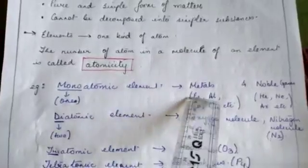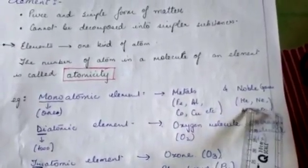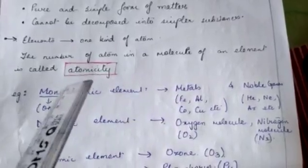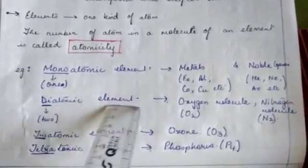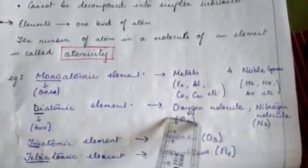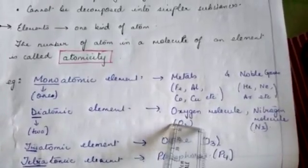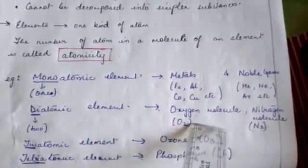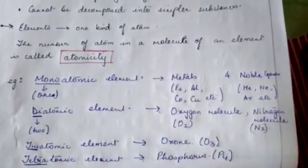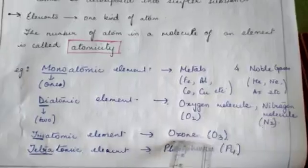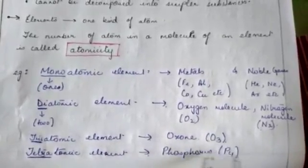Based on atomicity, we can divide elements into different categories. Monoatomic elements exist as a single unit — for example, iron, aluminium, cobalt, copper. Noble gases are also monoatomic because they don't need to combine with other atoms to form a stable electronic configuration. Diatomic elements exist at a molecular state where an element combines with itself — for example, oxygen (O₂), where two atoms of oxygen combine to form a molecule. Triatomic elements comprise three atoms — for example, ozone. Tetraatomic elements have four atoms — for example, phosphorus (P₄).